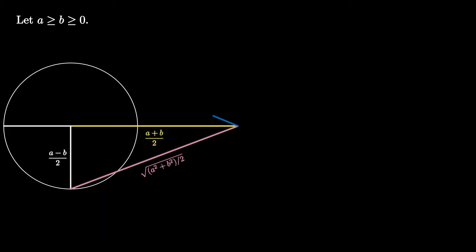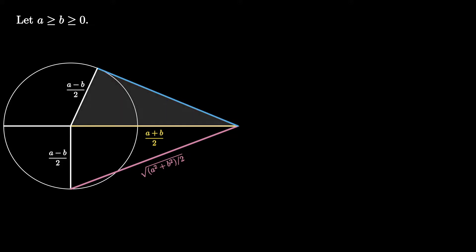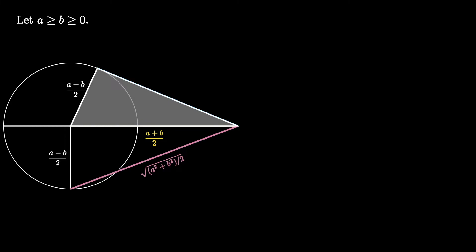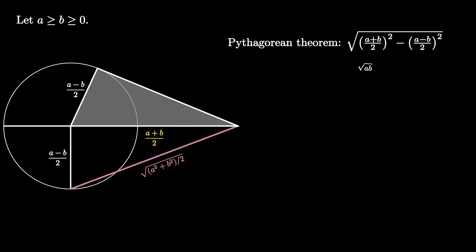Next, draw the tangent line to the circle that passes through the endpoint of the extended line segment, and draw a radius to this point, creating another right triangle highlighted here. We again use the Pythagorean theorem to determine that the missing leg has a length of the square root of ((a plus b) over 2) squared minus ((a minus b) over 2) squared, which simplifies to the square root of a times b.